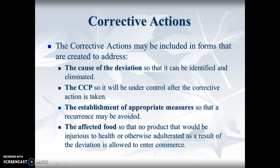Corrective actions should include identifying the causes of the deviation so they can be eliminated and tracked. If this happens every year in June, find out why it's happening in June. If it happens a lot when a certain person goes on vacation, find out what they were doing to keep everything in check. The CCP will be under control and recorded after the corrective action is taken. Establish appropriate measures so that recurrence can be avoided and no product injurious to health goes into commerce.